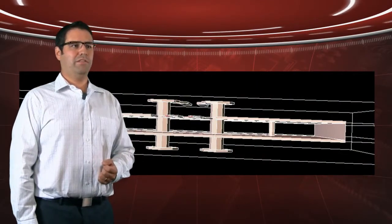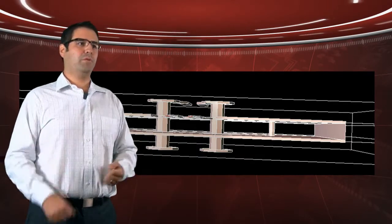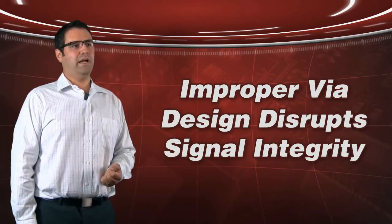So a VIA is a vertical structure traveling through the board and you have to properly design it in order for it to have a minimum amount of loss as well as being able to match the impedance of your transmission line to that differential VIA structure.